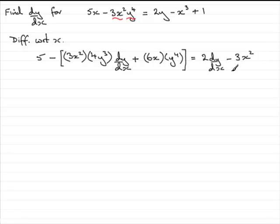So in the usual way, what we need to do is aim to get dy/dx the subject, so we need to expand this bracket out. So we have 5 minus, and this is going to come to 12x²y³ and then dy/dx, and then we've got minus over this plus, which is going to be minus, and then we've got 6xy⁴, equals 2 dy/dx minus 3x².